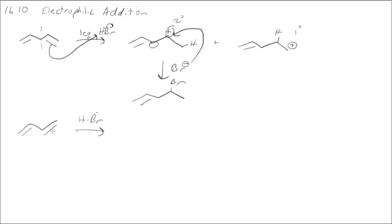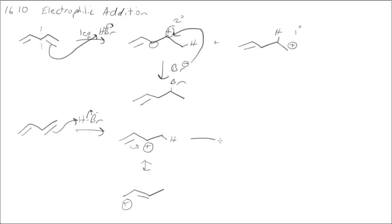With the conjugated diene, the proton adds and I get an intermediate, but now that intermediate is an allylic carbocation — not just secondary, but allylic. The electron pair can move over to form a resonance structure, giving two different resonance structures that exist simultaneously. When the bromide adds, there are two possible positions it can add. It can add to the first position, and if you look at where the H is and where the bromine is, they're next to each other.